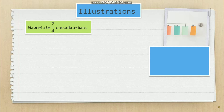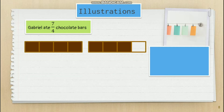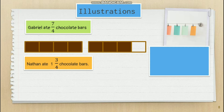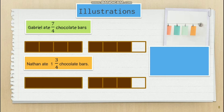We show 7/4 like this. Suppose these are the chocolate bars. This is how we illustrate 7/4 chocolate bars — 7 parts were taken. Next, let's have Nathan's. Nathan ate 1 and 3/4 chocolate bars, and 1 and 3/4 is an example of a mixed number. To show 1 and 3/4, we have this illustration. Now take a look at the illustration, and from there you can identify who ate more.